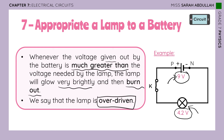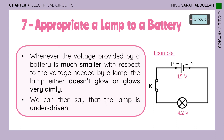We say that the lamp is over-driven — meaning we gave it a voltage of much greater value than the voltage needed by the lamp. In the last experiment, we used a battery of 1.5 volts, much smaller than that needed by the lamp. Whenever the voltage provided by a battery is much smaller than the voltage needed by the lamp, the lamp either doesn't glow at all if the voltage is really too small, or glows very dimly — giving a faint light. We say the lamp is under-driven.